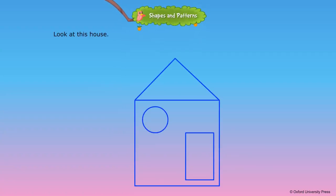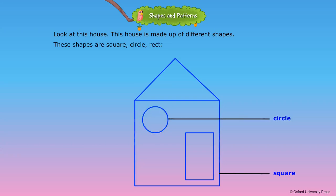Look at this house. This house is made up of different shapes. These shapes are square, circle, rectangle, and triangle.